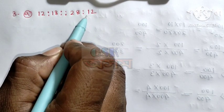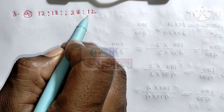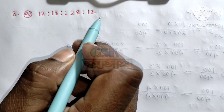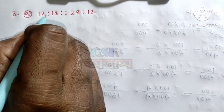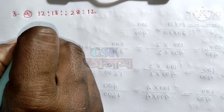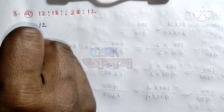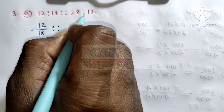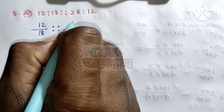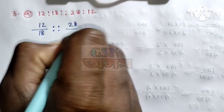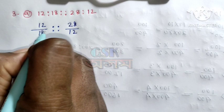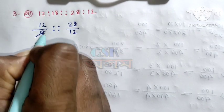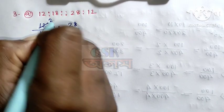3rd and 4th moments from 1st chapter selection. This is 12 to 18, which is 12 by 18, which is 28 to 12, which is 12 to 12.